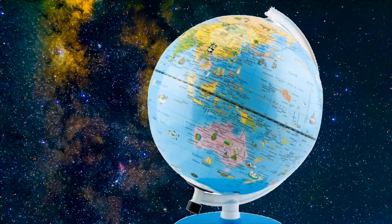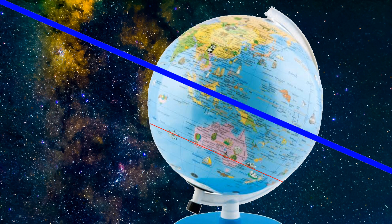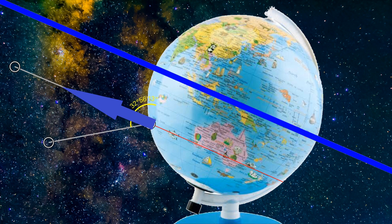We can use the globe Earth model and our latitude to help us find the Earth's celestial equator. From my latitude of 32.7 degrees in the southern hemisphere, if I point my camera down from zenith — or straight up — at the same angle as my latitude and do a star trail, we should be in the right spot and will see close to parallel trails, something like this.